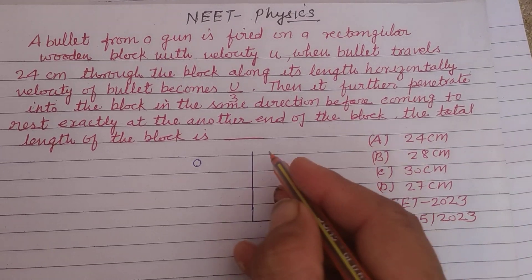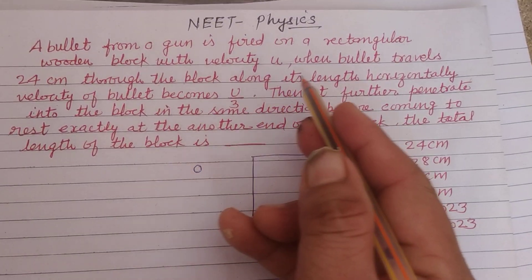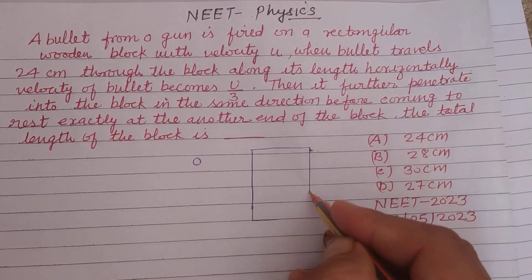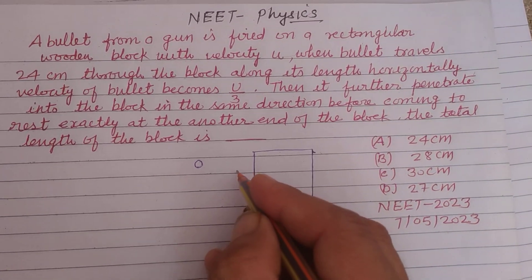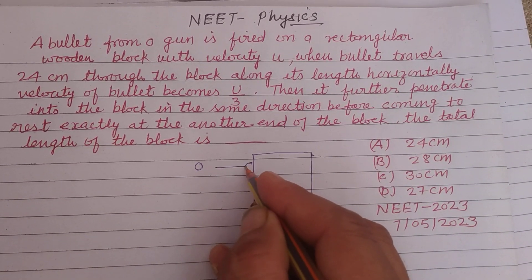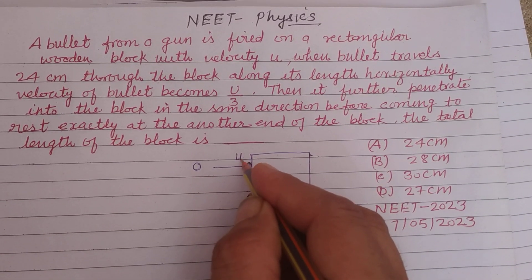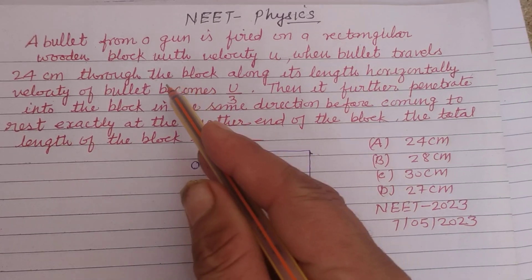The bullet hits the rectangular wooden block with velocity U.